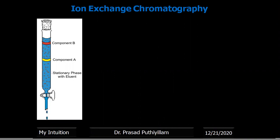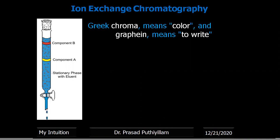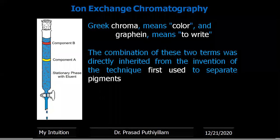So we'll see one by one: what do you mean by chromatography? Chromatography is a word obtained from Greek, in which 'chroma' means color and 'graphine' means to write — that means color which gives writing. They first used the chromatography method for the separation of pigments, which have color, and therefore they gave it the name chromatography.